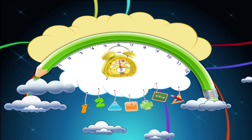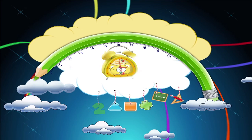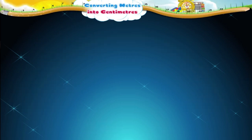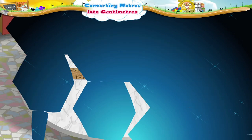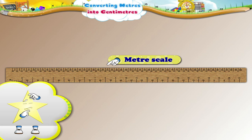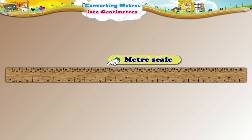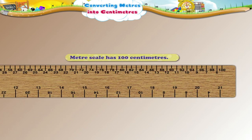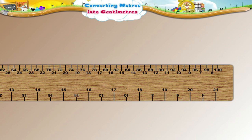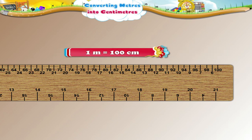Converting meters into centimeters. Hey Starry, do you remember seeing the meter scale? Good! We had learnt that the meter scale has 100 centimeters. So we can say that 1 meter equals 100 centimeters.